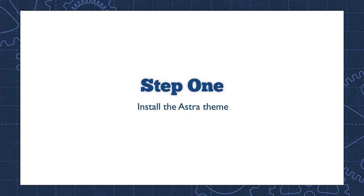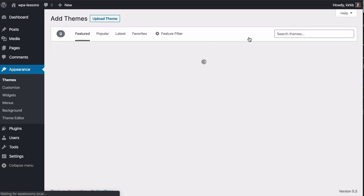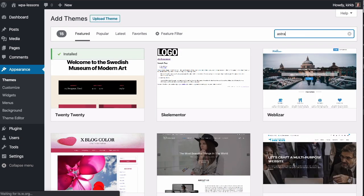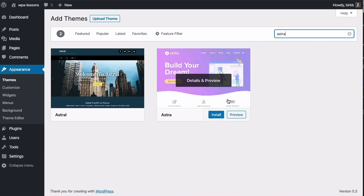Step one: we need a theme. If you want a nice website, you need a nice theme. Our members at WP Apprentice have agonized sometimes for months looking for the perfect theme. I've really come to like Astra over the last few months — it's lightweight, super fast, the free version has lots of features, and it's designed to work with the tools we're going to use. So step one is to install the free version of Astra. In WordPress, go to Appearance > Themes > Add New and search for Astra, then install and activate it.